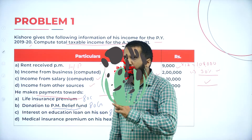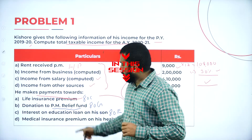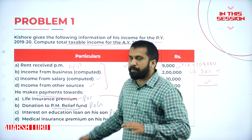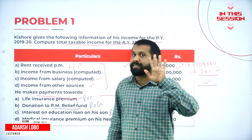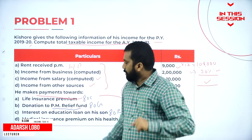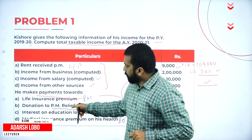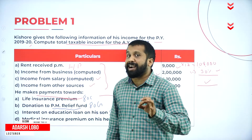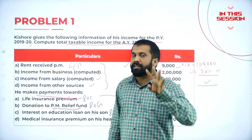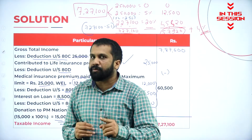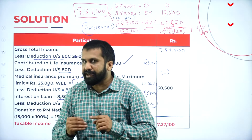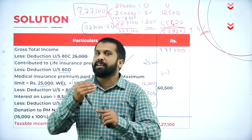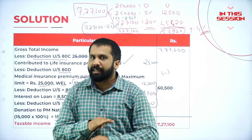If it is Prime Minister Drought Relief Fund, it is applicable for 50% deduction. If it is not mentioned, it is applicable for 100%. Rebate you will get only if income is less than 5 lakh. If it is more than 5 lakh, the rebate option will not be applicable.